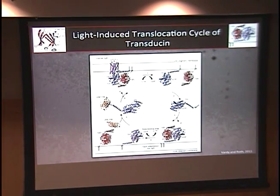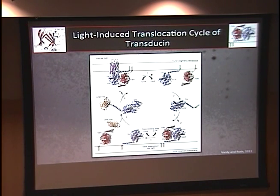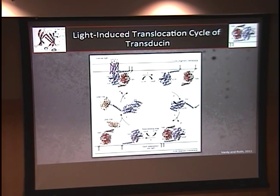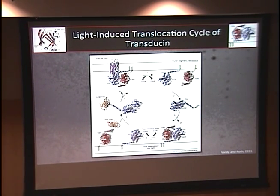We've developed a light-induced translocation model of transducin. In response to light, the transducin heterotrimer has GTP exchanged for GDP and dissociates — making it easier to pull out of membranes. It gets transported to the inner segment, where it recombines on available membranes such as endoplasmic reticulum or Golgi. In the inner segment, absent rhodopsin as guanine exchange factor, GTP is slowly hydrolyzed to GDP over about three hours. When the subunits dissociate, UNC-119 acts as a chaperone, protecting the acyl chain from the aqueous environment and transporting transducin alpha back to the outer segment.